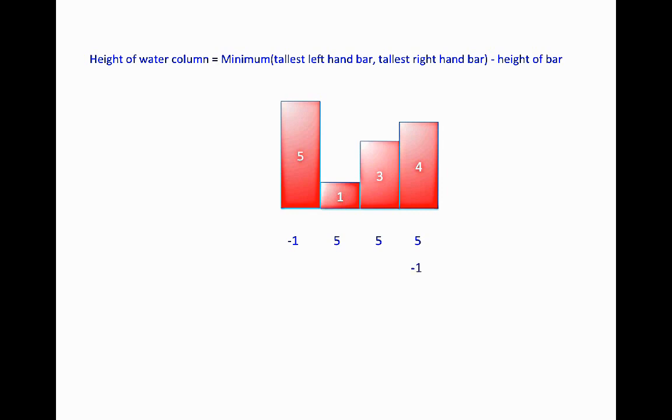Likewise, let's calculate the tallest right-hand bar. Four is the rightmost bar so there is no tallest right-hand bar. The tallest bar to the right of three is four. The tallest bar to the right of one is also four. The tallest bar to the right of five is also four. Now, this is the water column that we have here which boils down to three here and one here giving us a total of four.